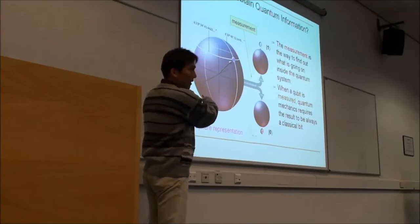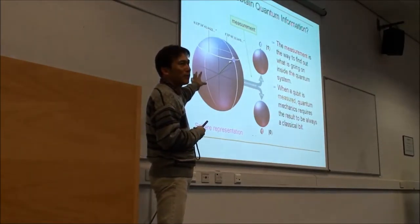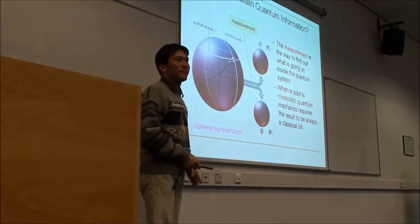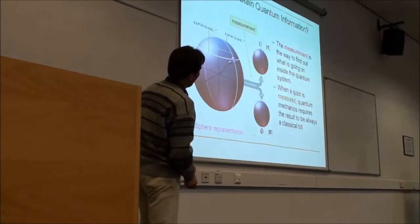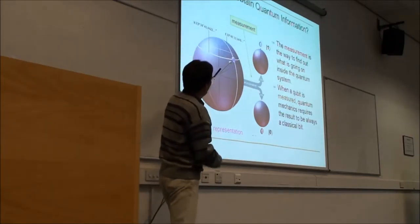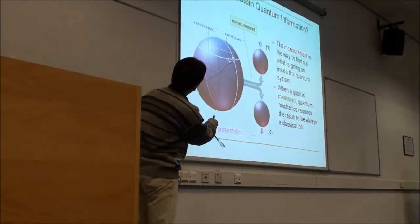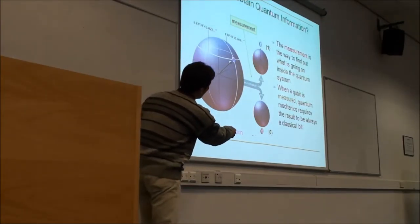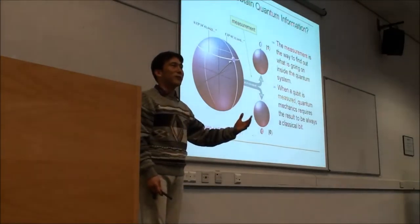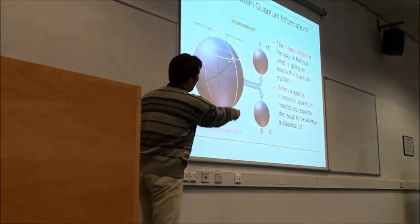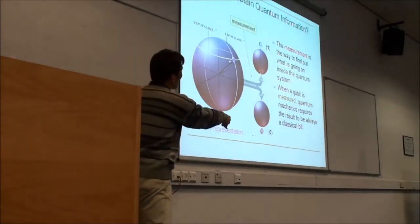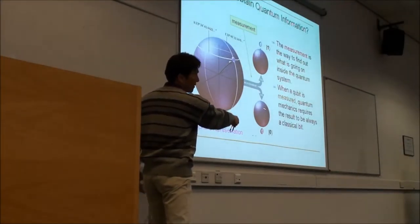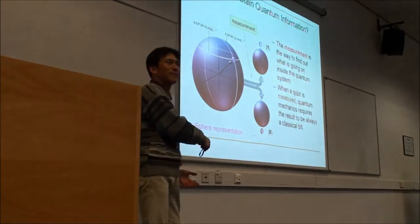For example, if the spin is in some direction and you measure it, the quantum state is destroyed and collapses to one of two classical states — either 0 or 1. We can't take both. Depending on the angle, in this case, there may be a 70% chance to get 1 and 30% chance to get 0. This is probabilistic. You only get one state with probability, and you never know which you'll get in one single measurement. Once you measure the state, there is no way going back.